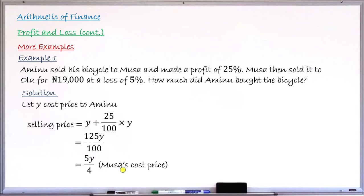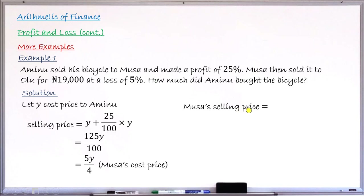We now move to the transaction between Musa and Olu. Olu bought the bicycle from Musa for 19,000 Naira. Since Musa sold at a loss, the amount he sold it for is below the 5Y over 4 he paid. Let's find Musa's selling price.